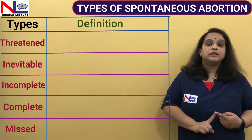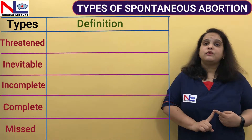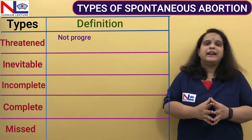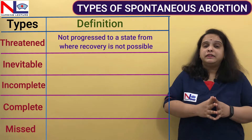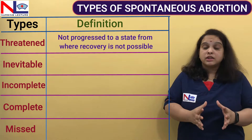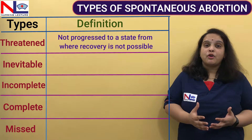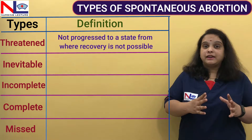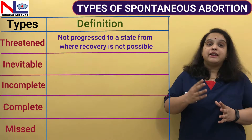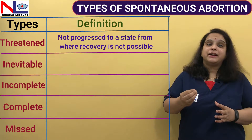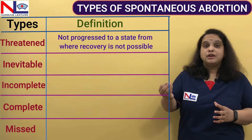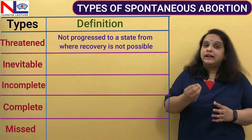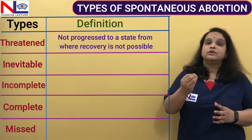What is the definition of all these types of abortion? First is threatened abortion. This is the clinical entity where the continuation of pregnancy is possible. Although it is a type of abortion, this is the type where we can recognize the threat, manage it properly, and make the pregnancy continue till term. So this is the clinical entity where recovery is possible.